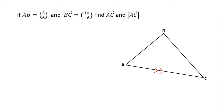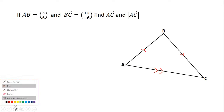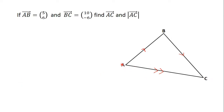From the triangular law of vector addition, vector AC — which is the resultant vector — is equal to vector AB plus vector BC. Moving from A to C, or vector AC, is equal to moving from A to B, or vector AB, plus moving from B to C. We know from the triangular law that AC equals AB plus BC. The question gave us AB and BC, so we can replace AB with 5, 6 and BC with 10, negative 6 in order to find vector AC.